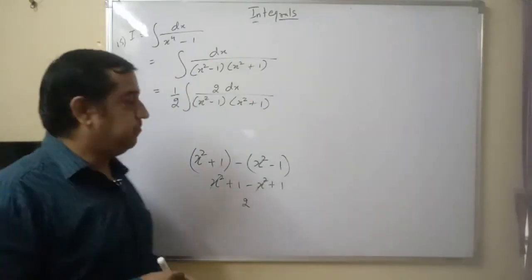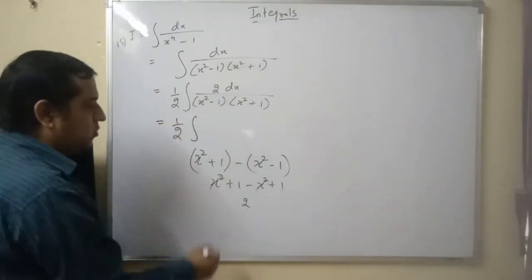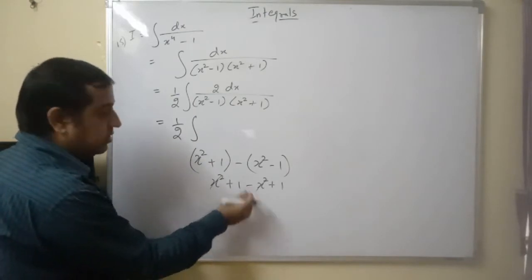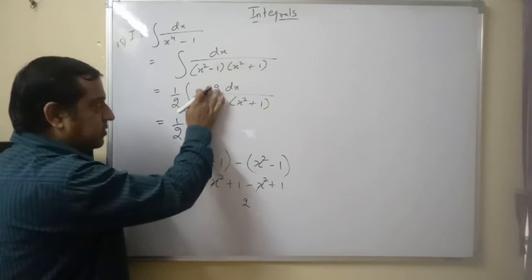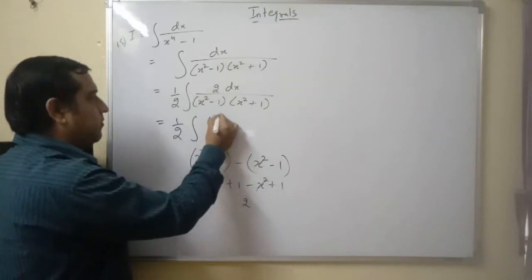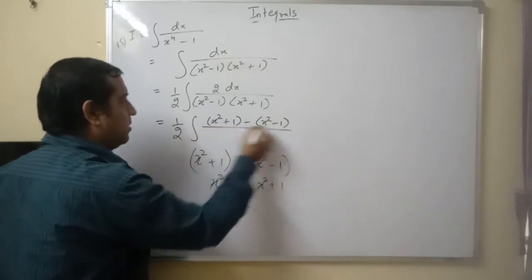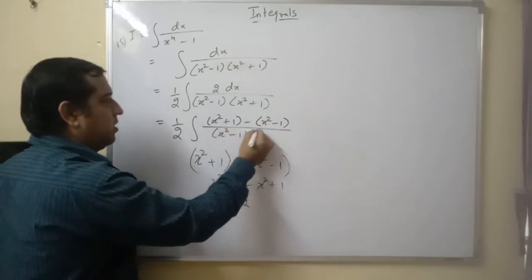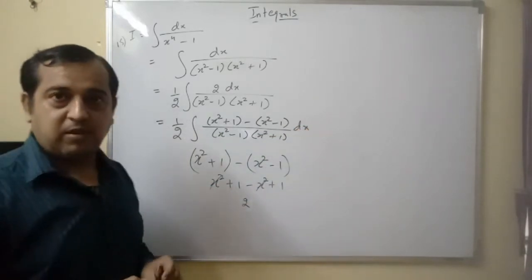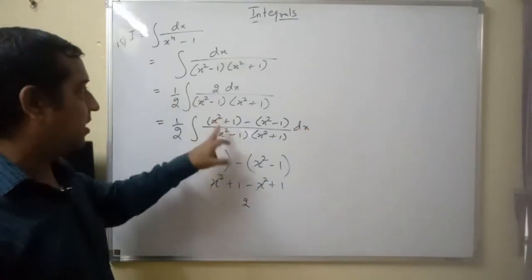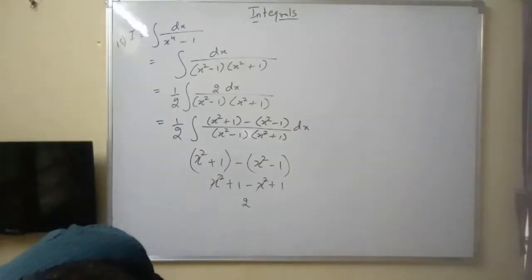Now see, this becomes 1 by 2 integral. This 2, it is a difference of these two. So this 2 above, consider that. We get x square plus 1 minus x square minus 1, upon x square minus 1 into x square plus 1 dx. Matlab, the 2 we multiplied and divided, so the 2 above we took, that 2 we will take as the difference of these two brackets.